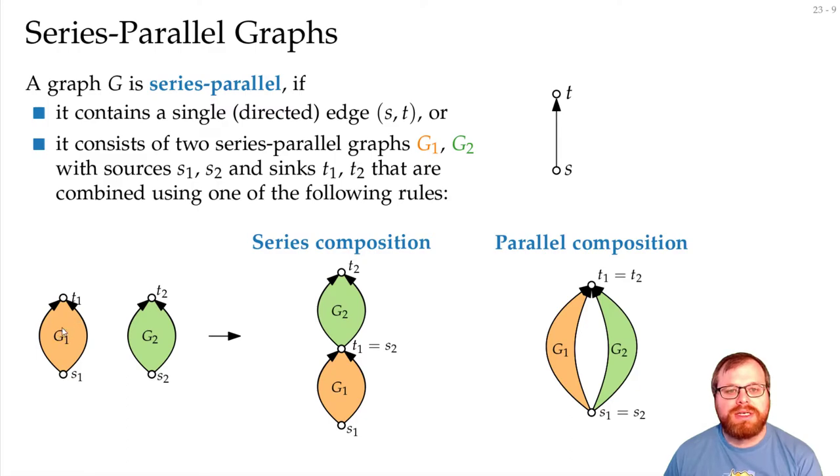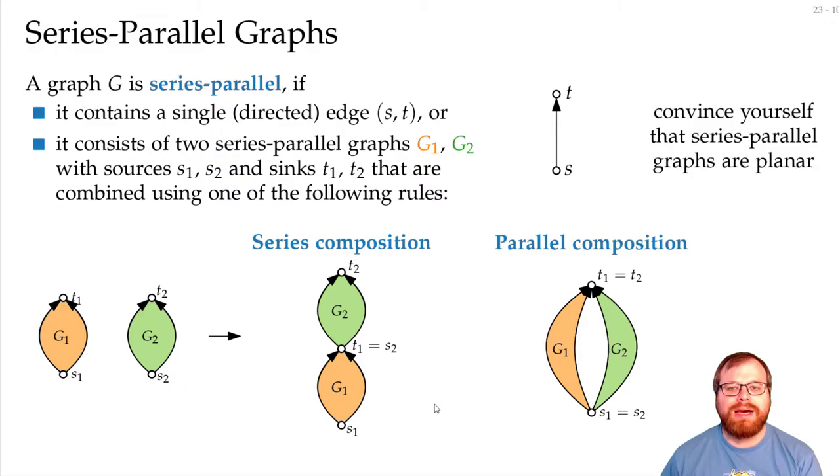So from two Series-Parallel Graphs, we can get two larger Series-Parallel Graphs. These graphs clearly are planar, I won't prove that here. I'm sure you can figure out yourself how to prove that those graphs are planar. You just have to go through these compositions and then figure out, if you have a planar drawing of both, how to get a planar drawing of the composed graph.